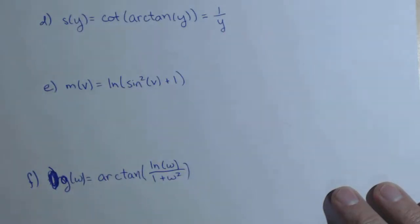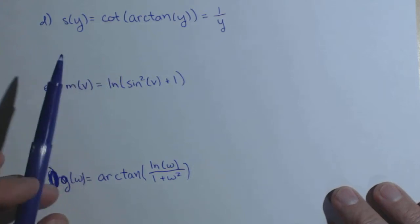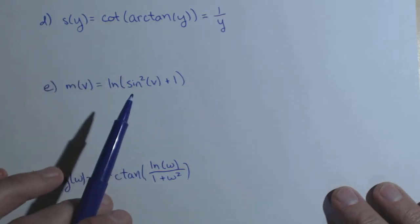If you want to see why that is, just make yourself a right triangle, we'll call arctangent of y theta. So tangent of theta equals y, label the sides of your triangle, and you'll see what cotangent of theta needs to be.